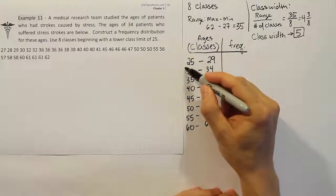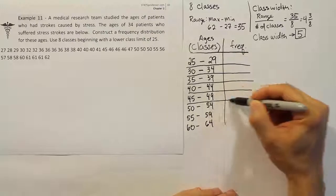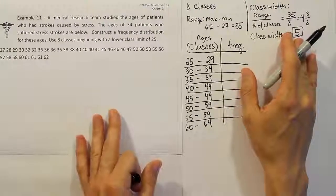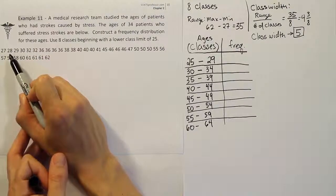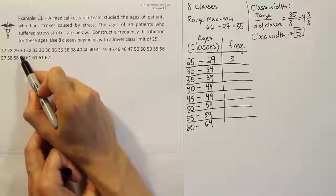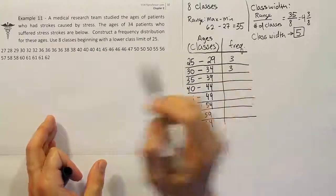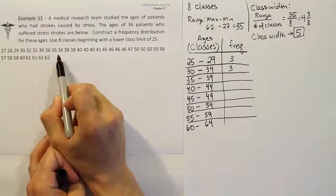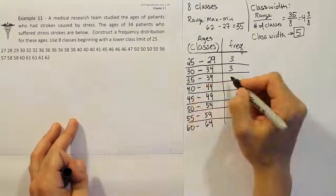Now we fill in the frequencies by counting how many values fall into each category. For the class 25–29, the values 27, 28, and 29 fit — that's 3. For 30–34, there are 3 more values. For 35–39, counting through the data gives us 1, 2, 3, 4, 5, 6 — so six values fall in that class.